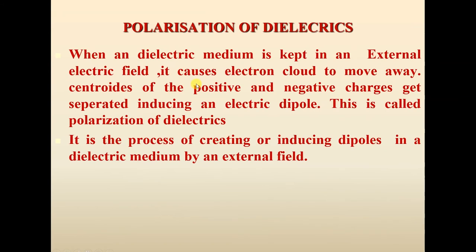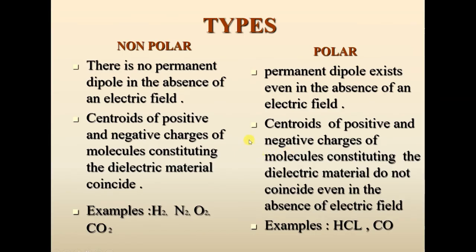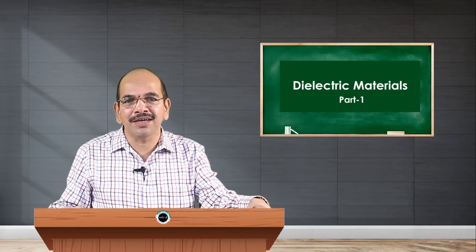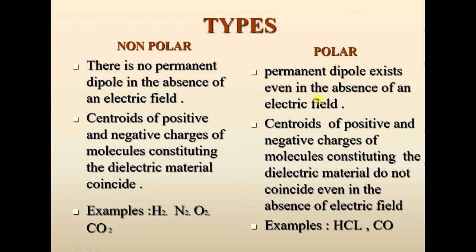Now let us see what happens to these dipoles — polar or non-polar — in the presence of an external field. Whenever you apply an external electric field, there will be polarization of the dielectric medium. In polar dielectrics, permanent dipoles exist but are randomly oriented, so net dipole moment is zero. In non-polar dielectrics, positive and negative charge centers are not separated, so net dipole moment is also zero. In both cases, net dipole moment is zero in the absence of an external field.